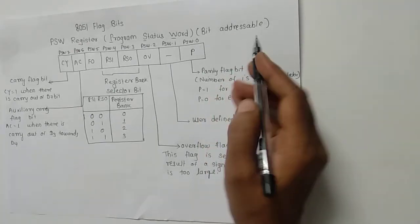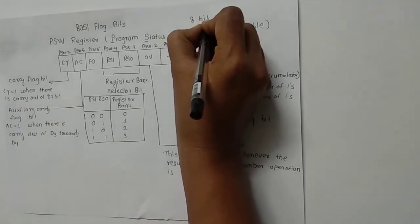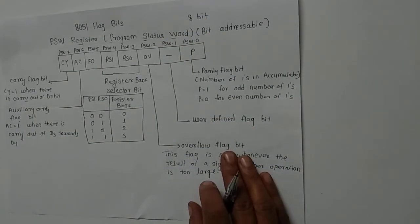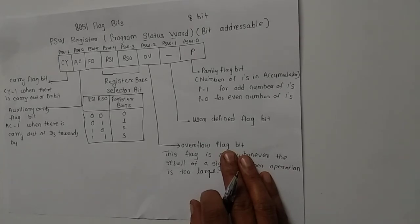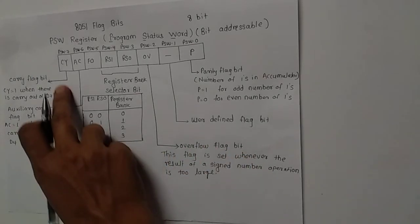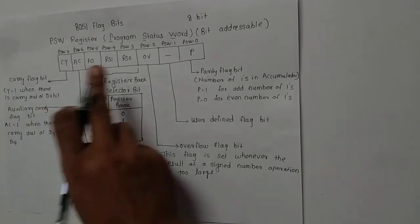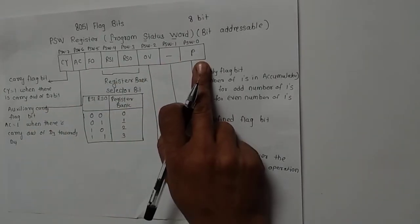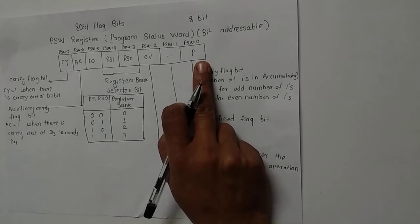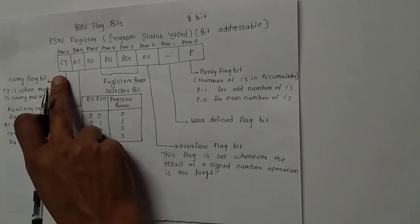This PSW register is an 8-bit register of the 8051 microcontroller. This PSW register gives information about the conditional flag bits such as carry, auxiliary carry, overflow, and parity. So let us look at the structure of this PSW register.